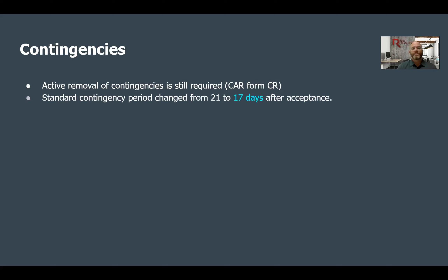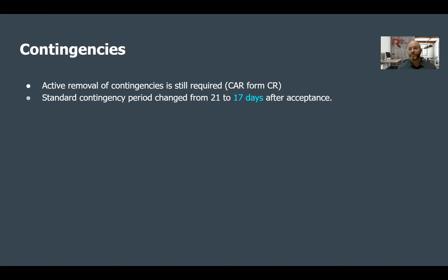The standard contingency period has changed from 21 to 17 days after acceptance. The appraisal and loan contingency was defaulted at 21 days in the previous contract — now it's at 17 days. So if your lender says they need some extra time to get underwritten approval in place, pay attention, because it is no longer 21 days per the contract. If you're just leaving everything as default, it is now 17 days. If you need to bump that up, make sure you do so.